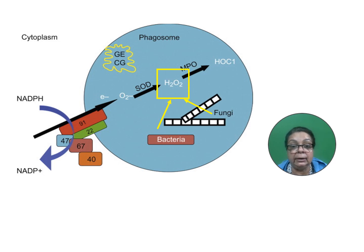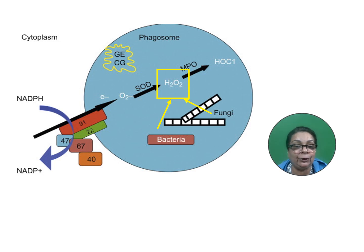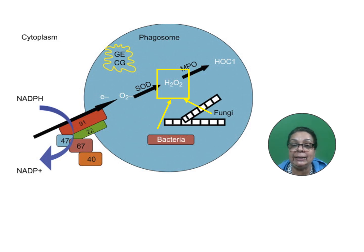But this is only possible for catalase negative organisms, because catalase positive organisms will immediately destroy their hydrogen peroxide using their catalase enzyme, and hence will survive inside the macrophages.